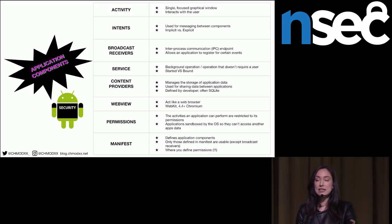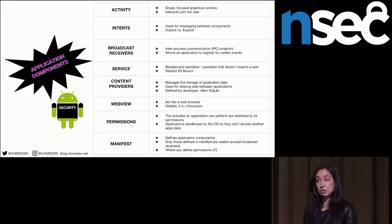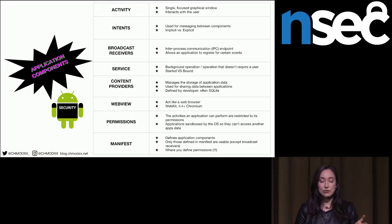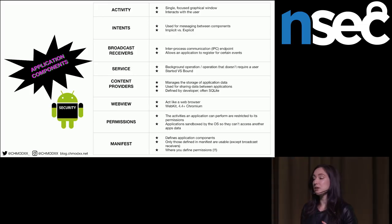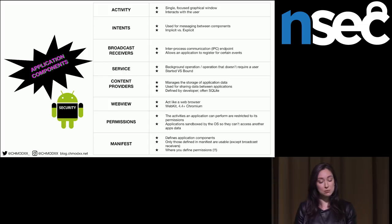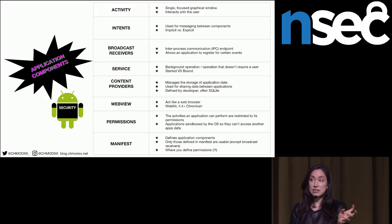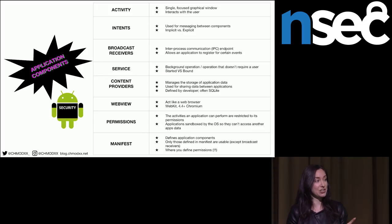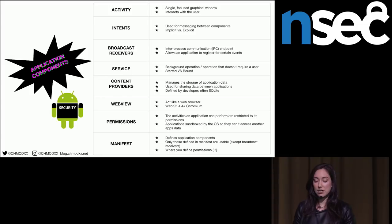An activity is a single-focused graphical interface — basically what you're interacting with as the user. Intents are used for messaging between components. You have implicit intents and explicit intents, which is going to become very important in our discussion later because there are a lot of vulnerabilities around these two different types. Explicit intents are routed to a single application. Implicit intents are routed to any application that shows interest in receiving the intent being sent out, which sounds scary — and it is.